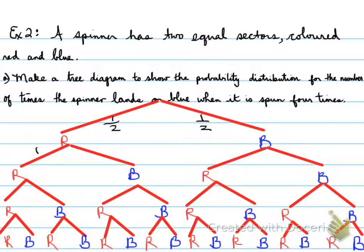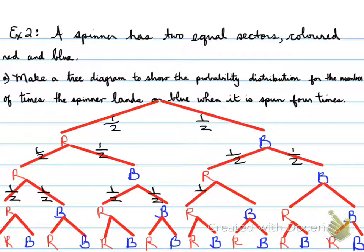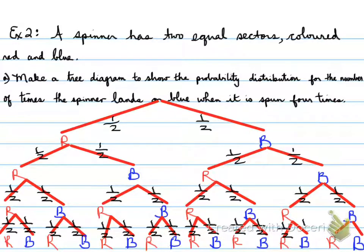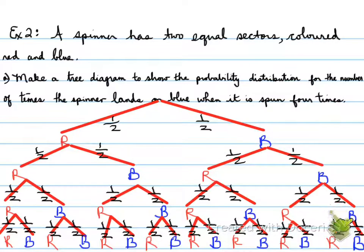We need to calculate the probability. There's a 1/2 chance of getting red and a 1/2 chance of getting blue each spin. So the probability of any specific sequence of four spins is 1/2 × 1/2 × 1/2 × 1/2.